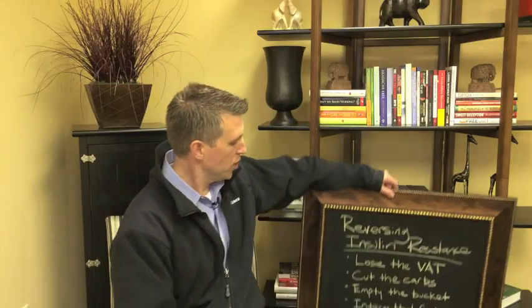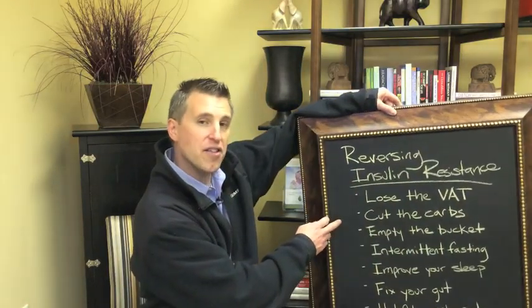Unfortunately, there's no way to target that particular fat, so we've got to lose weight overall. Being heavy, obese, or overweight is not the sole cause of type 2 diabetes, but it is a contributing factor, and if you have extra weight we've got to try to get that off — especially that deep visceral fat. Number 2 is to cut the carbs.